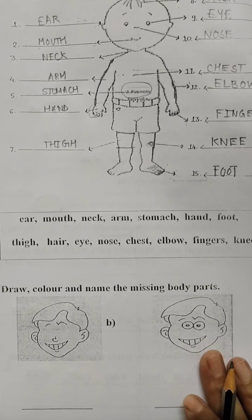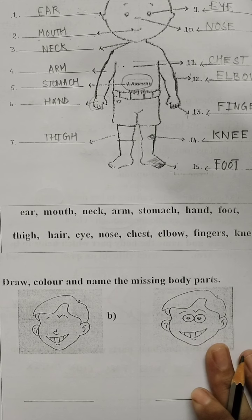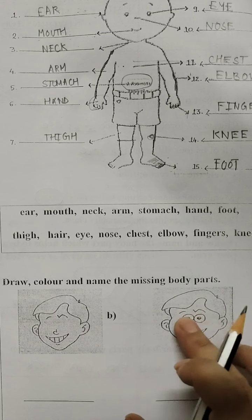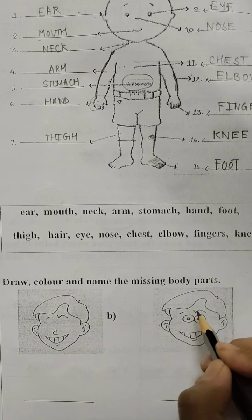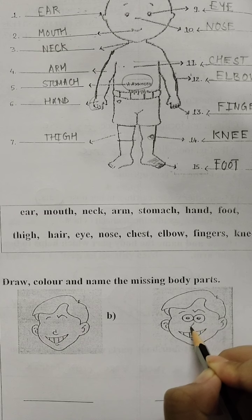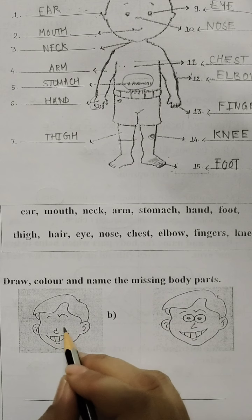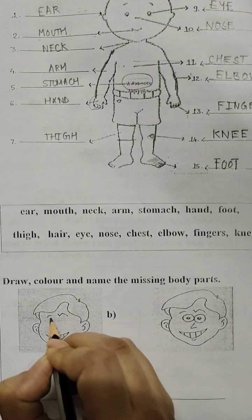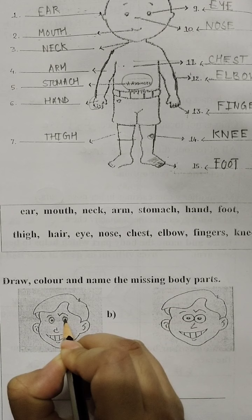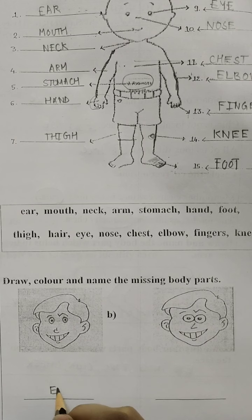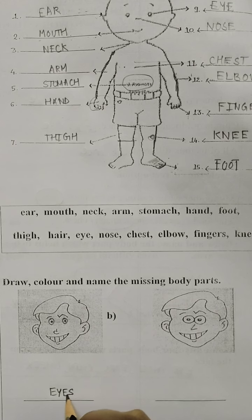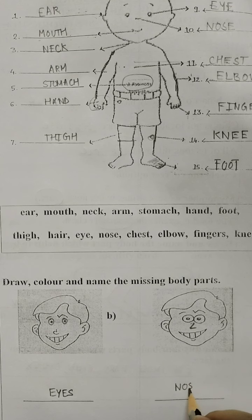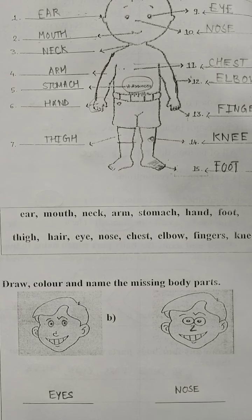So now students, let us come to the last and the final question. That is draw, colour and name the missing body parts. So here in this picture, as you can see, what is missing children? The nose is missing. And in this picture, what you can see is missing? The eyes are missing. So we will draw the missing body parts. And here we will write that the eyes are missing, and here we will write that the nose is missing. So thank you children.